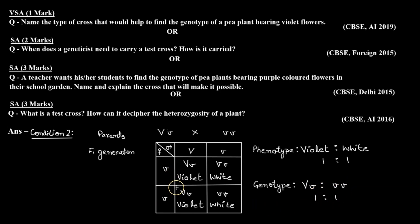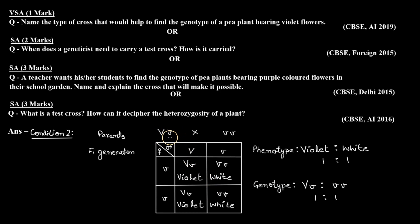So this cross is clear. If the test cross yields both dominant and recessive phenotypes, then our specimen dominant phenotype will be heterozygous. I hope this question is clear to you. Thank you.